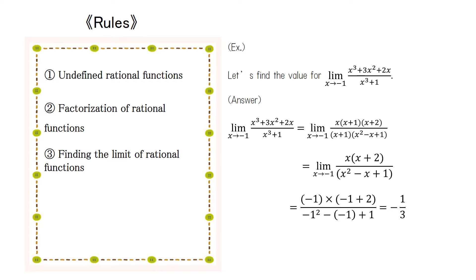Next, let's try to find the limit of a rational function. Since (x³ + 3x² + 2x) / (x³ + 1) is not defined when x equals negative 1 and the numerator and denominator are both zero, we can factor. Factoring gives us x(x + 1)(x + 2) over (x + 1)(x² − x + 1).